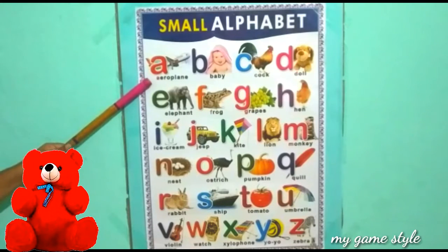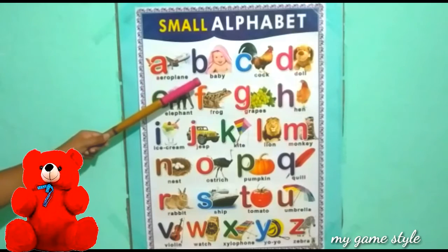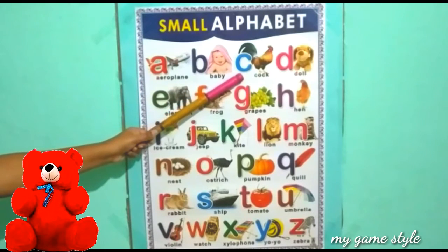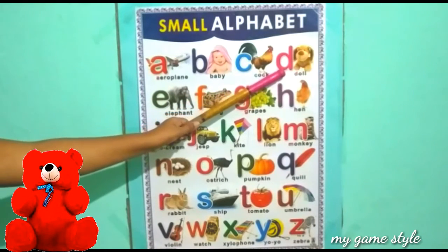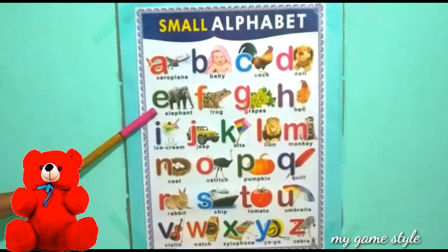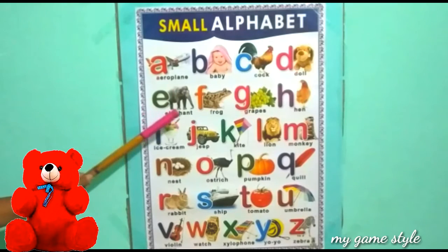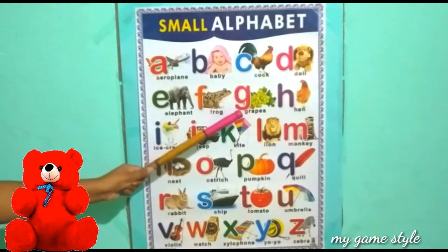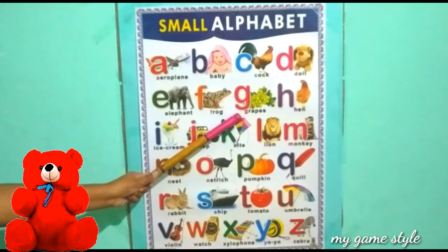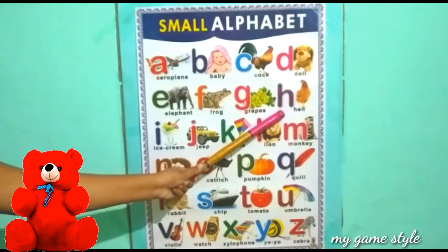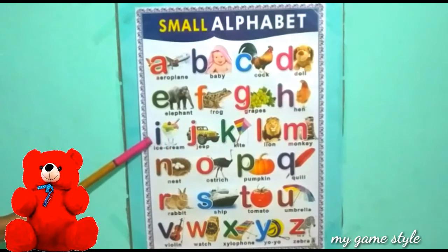A for Aeroplane, B for Baby, C for Cop, D for Doll, E for Elephant, F for Frog, G for Grapes, H for Hen, I for Ice Cream.